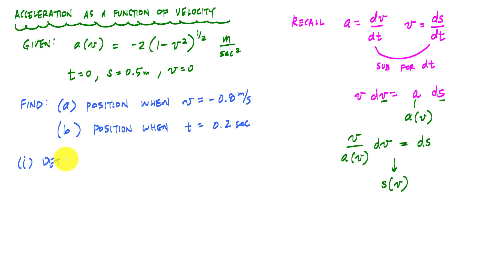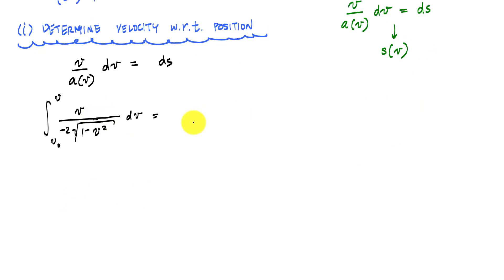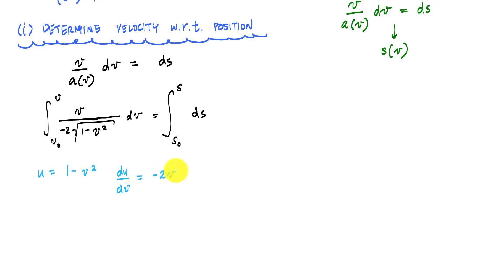If I have the position as a function of velocity, I can just plug in negative 0.8 meters per second and get the position right away. After substituting the acceleration into the integral, I'll use a substitution: let u equal 1 minus v squared. The derivative du/dv equals negative 2v, so dv equals du over negative 2v.